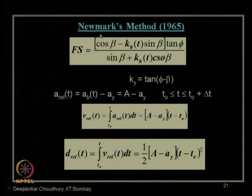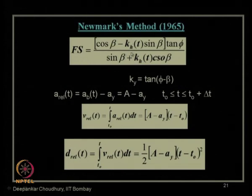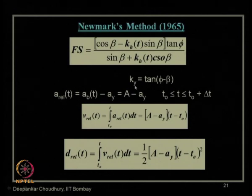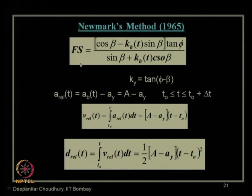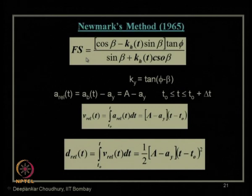Newmark introduced the concept of yield acceleration — the value of acceleration at which the slope factor of safety equals 1. If the actual seismic acceleration at a site is less than the yield acceleration KY, the factor of safety is automatically more than 1 and slope displacement need not be worried about. But if the seismic acceleration exceeds KY, the slope will fail with factor of safety less than 1.